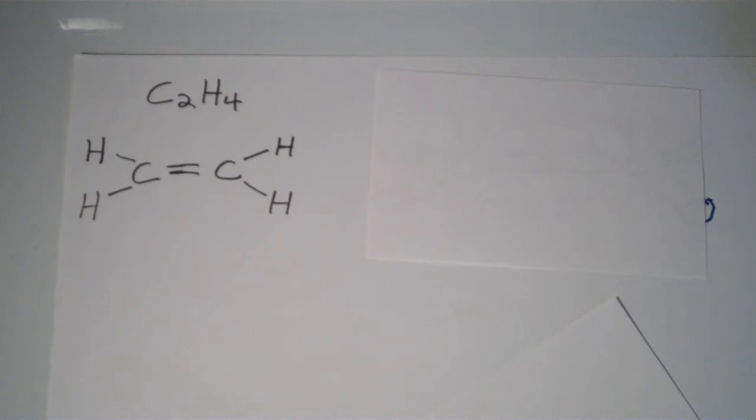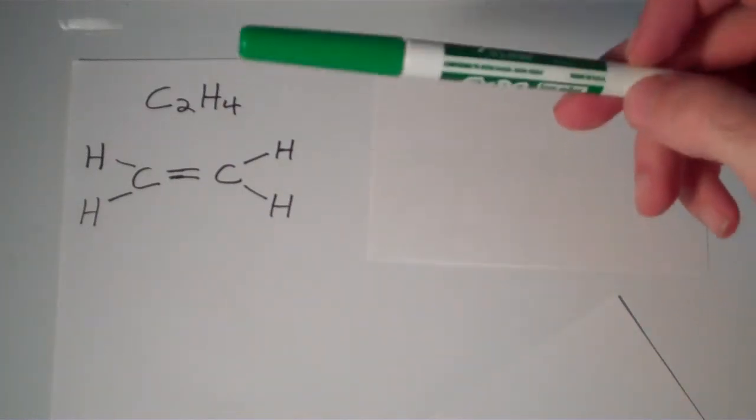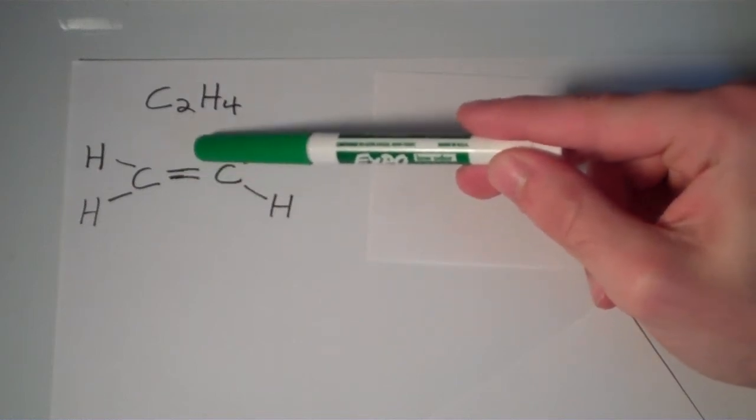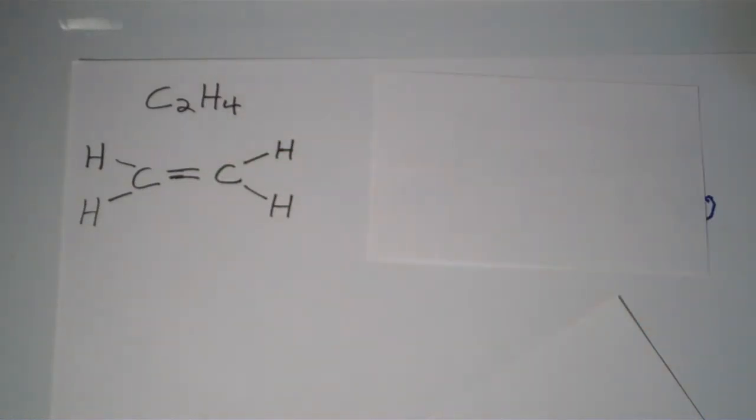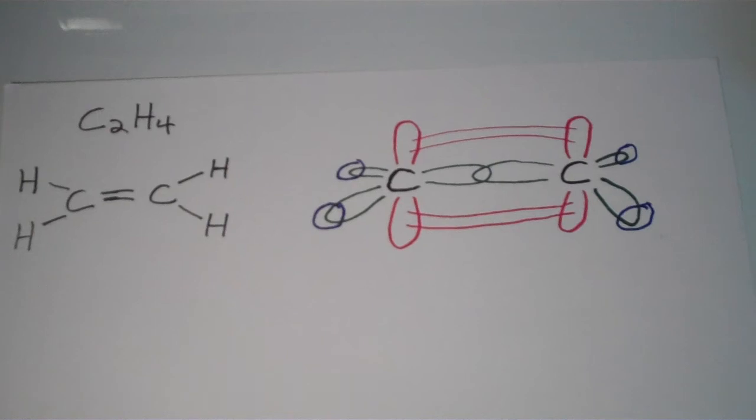And if you were just applying Lewis theory alone, there's nothing about Lewis theory that gives any insight as to the nature of the double bond. For all we know, each of these two bonds in the double bond are equivalent. But according to valence bond theory, the two bonds are highly distinct from one another. So if we look at the actual picture of what's going on with C2H4, it really looks something like this.